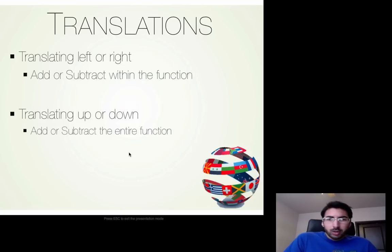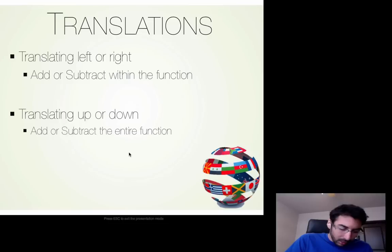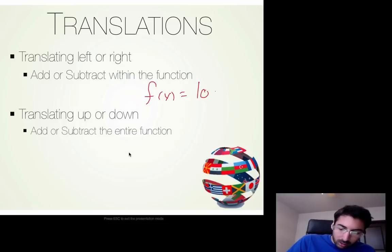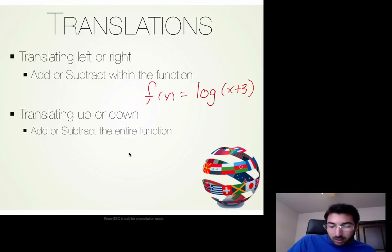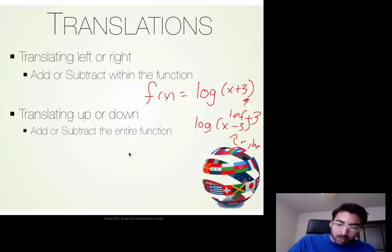First we're going to start with translations. Before we've done translations, transformations, and reflections — these are the same things we've done with exponential functions and functions before that. If we want to move our graph to the left or right, we're going to add or subtract within the function. For example, in a log you could have f(x) = log(x + 3), and in this case we would be translating it 3 units to the left. Same thing if we had log(x − 3), it would be going 3 units to the right — it's inside.